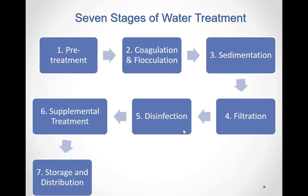Today, the most common steps in water treatment used by community water systems include seven steps. However, not all of these steps are present in all plants. These steps are: pretreatment, coagulation and flocculation, sedimentation, filtration, disinfection, supplemental treatment — which is utilized in some plants but not others — and finally storage and distribution.